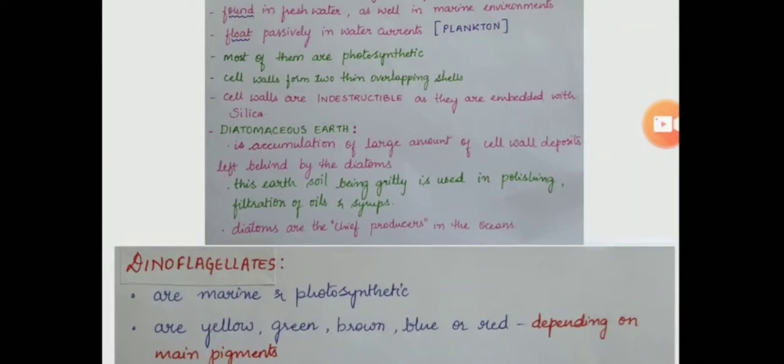Chrysophytes include diatoms and golden algae. Golden algae are also called desmids and the location is freshwater. They are found in marine environments as well like sea or ocean. Chrysophytes float passively in water currents. Example is plankton.